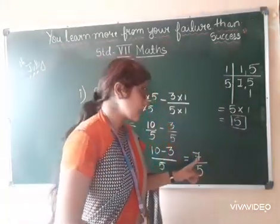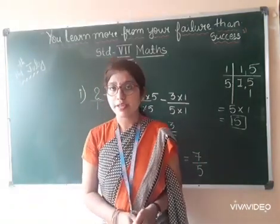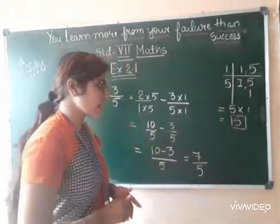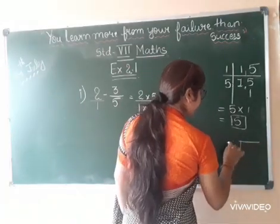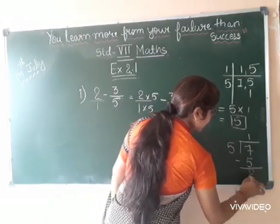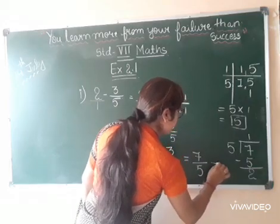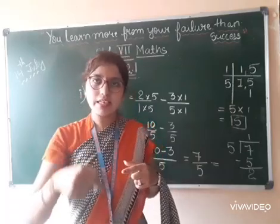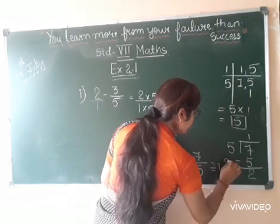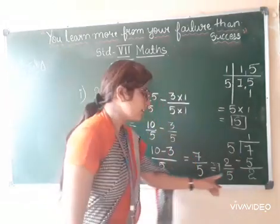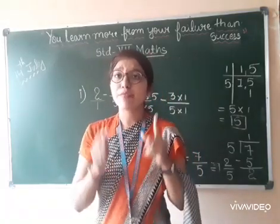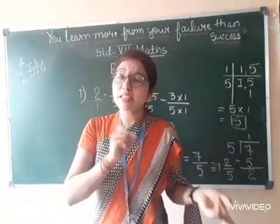Now 7 upon 5 — you can see this is an improper fraction. Whenever you get an answer in improper fraction, you have to convert it into a mixed fraction. Mixed fraction mein kaise karein? Divide karo like this: 5 into 7 — 5 ones are 5, remainder is 2. The format is: quotient, remainder upon divisor. So the answer is 1 and 2 upon 5. You can verify: 5 times 1 plus 2 gives you 7. Always convert an improper fraction answer into a mixed fraction.